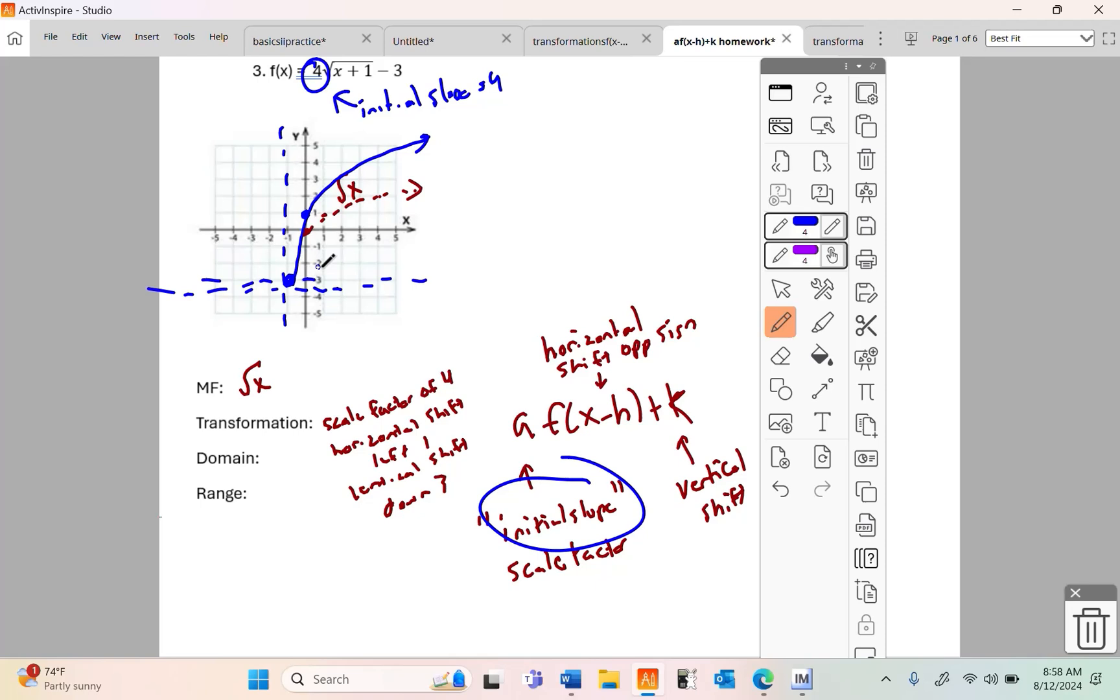So, left three. I missed that bad, didn't I? Down three, left one right there. And instead of rising one and running one, I'm going to rise four and run one. That's the difference between the two. And then I'm going to draw that arm. It's four times as tall.